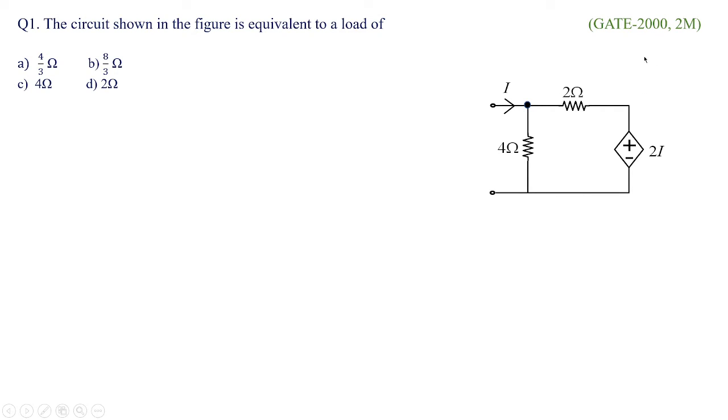The question which was asked in 2008 for two marks is: the circuit shown in the figure is equivalent to a load of options A, 4 by 3 ohms, B, 8 by 3 ohms, C, 4 ohms and D, 2 ohms. The problem looks to be simple, so you need to imagine the exact conditions or assumptions in order to solve the problem. For that, first see what kind of source is given to you.